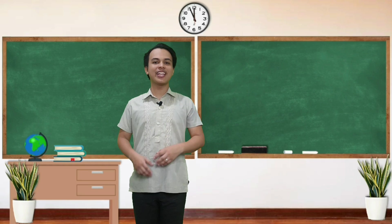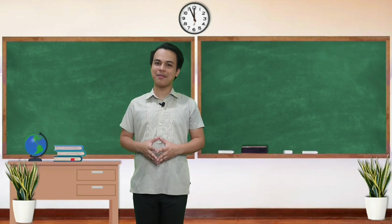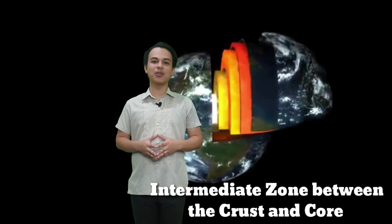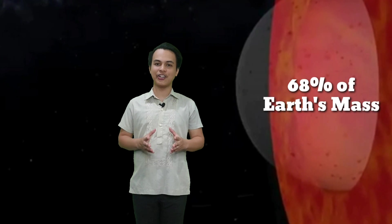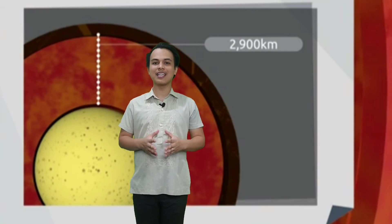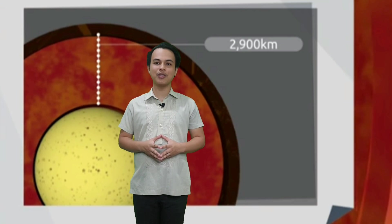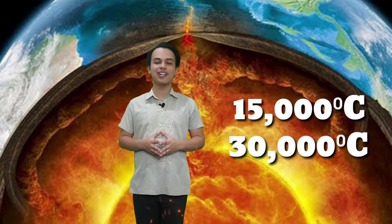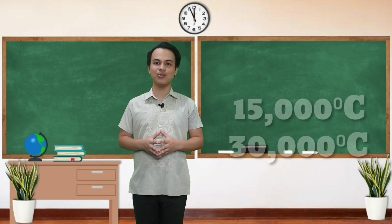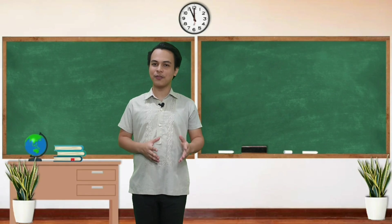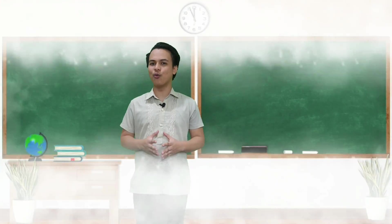The second concentric layer that we will discuss is the mantle. The mantle is the intermediate zone between the crust and the core and consists mostly of solid rocks. Ang mantle ay bumubuo sa 80% ng Earth's volume at 68% ng Earth's mass. It has an approximate thickness of 2,900 kilometers with a temperature ranging from 1,500 degrees Celsius to 3,000 degrees Celsius. Ito ay katumbas ng 15 to 30 times ng init ng pumukulong tubig.